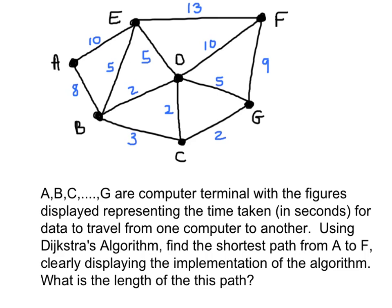Here we have A, B, C, D all the way down to G, which are computer terminals, with the figures displayed representing the time taken in seconds for data to travel from one computer to another. For example, the time taken for data to flow between A and B is 8 seconds. The question we're asked is: using Dijkstra's algorithm, find the shortest path from A to F, clearly displaying the implementation of the algorithm. What is the length of this path?